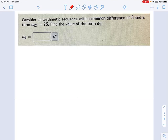So in this video, we're going to take our old friend, the explicit formula, and learn how to change it. Consider what we're being asked here. We're told there's an arithmetic sequence with a common difference of 3, and a term, the 22nd term in the sequence, is the number 26. And what they want to know is the 9th term in the sequence.